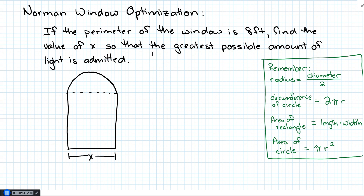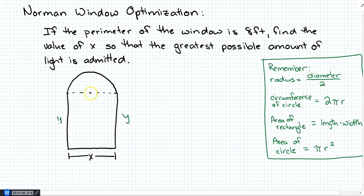Let's figure out a formula for the area. We have the width here as X. Let's call the height Y. I've got two sides that are both Y, and then a semicircle at the top — that's the characteristic of a Norman window: a rectangle with a semicircle on top. Since this is a semicircle, it has a radius equal to one-half of X, so r = X/2.